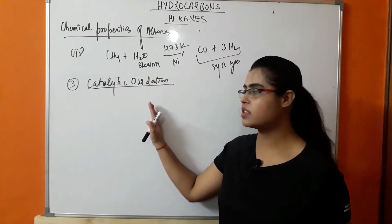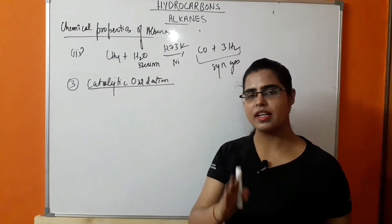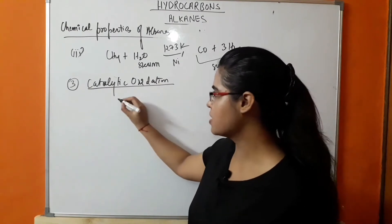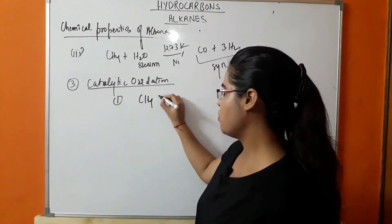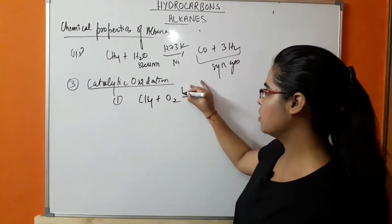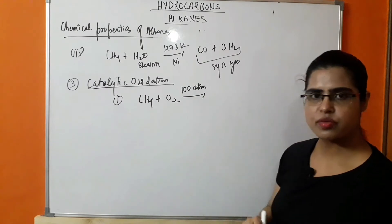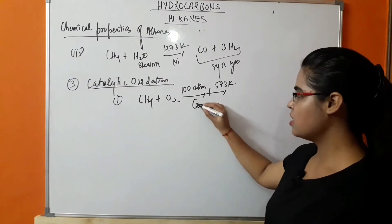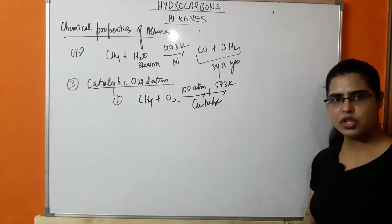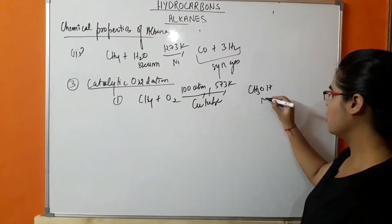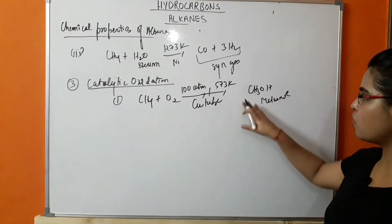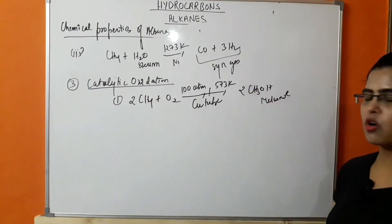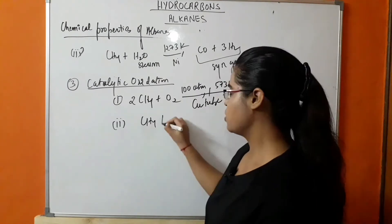The next type of oxidation is catalytic oxidation. In this case, oxidation takes place with the help of a catalyst, and if the catalyst changes, the product obtained will be different. First example: CH4 in the presence of O2 at 100 atmosphere pressure, 573 K temperature, with a copper tube as catalyst — this results in formation of methanol. Balancing gives 2CH4 + O2 → 2CH3OH.